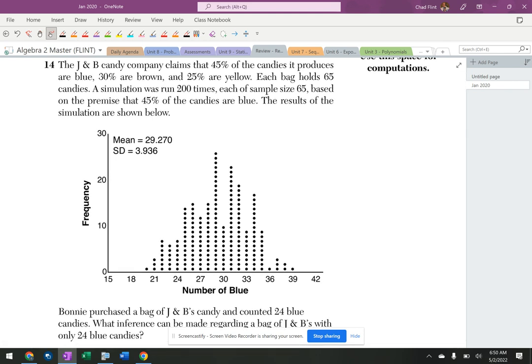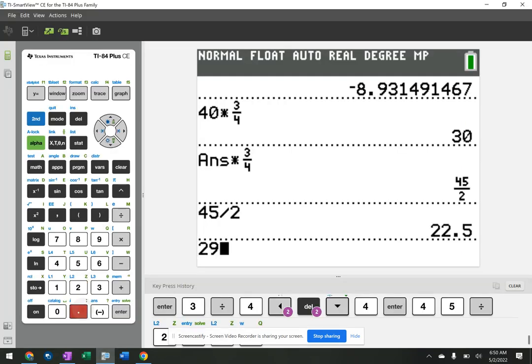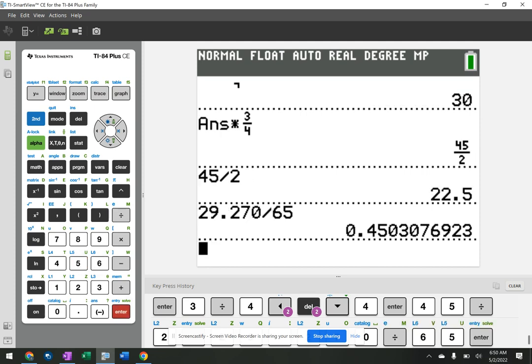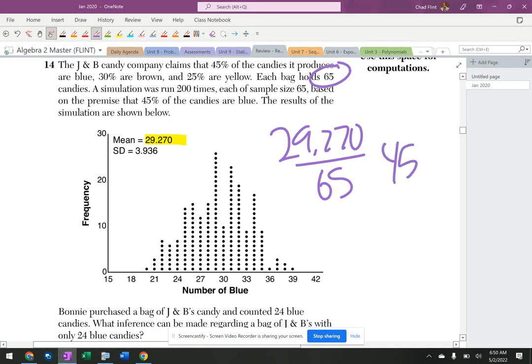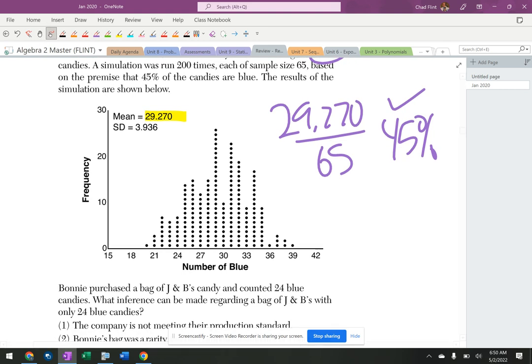The mean is 29.27, so that's kind of evil. Let's see. How many candies are in the bag? Each bag holds 65 candies. So 29.270 over 65. 29.270, I hate these questions. It's 45% right on the nose. Okay, so that's good. That means that their 45% is correct. So they're trying to trick you on that to get you to think 45 isn't the right number.